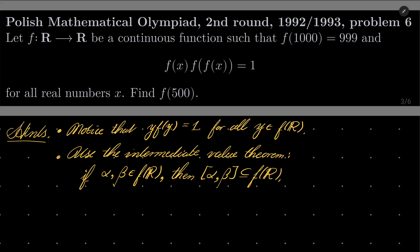First notice that our functional equation says that y times f of y equals 1 for all elements of the image of our function, not necessarily for the whole domain, but for the image it holds, because every element of the image can be written as f of x.